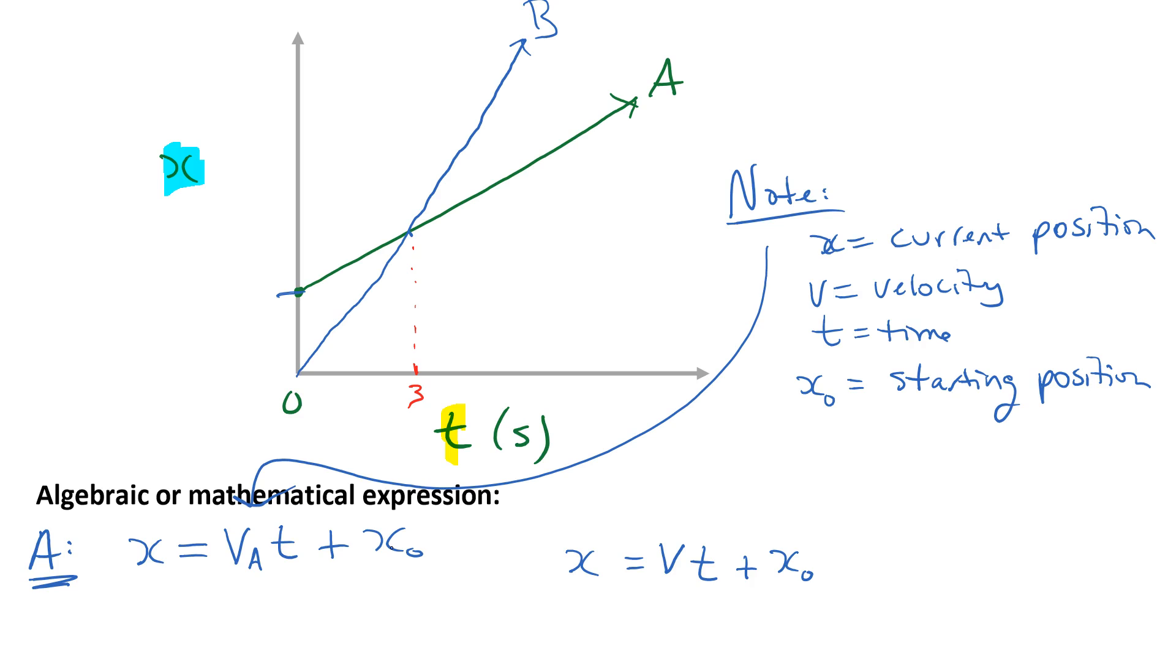For cyclist A, the position is going to be the velocity of cyclist A multiplied by time plus x zero. For B, the position for cyclist B will be equal to the velocity of cyclist B multiplied by how much time has gone by. Now for B however, they don't have a starting position other than zero. So I can just leave that off. And the one thing that we know is that the velocity of A is less than the velocity of B.